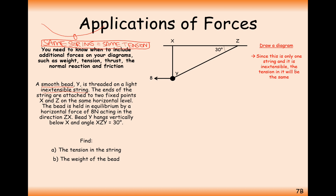Since there is only one string and it's inextensible, the tension is the same — the tension between Y and Z equals the tension between X and Z. We add in the weight force Mg acting downward. Now we resolve forces. The tension force is the only one not in a horizontal or vertical direction. Using the Z angle, we get a 30 degree angle, giving components T cos 30 and T sin 30.